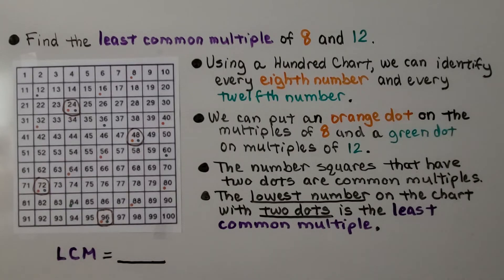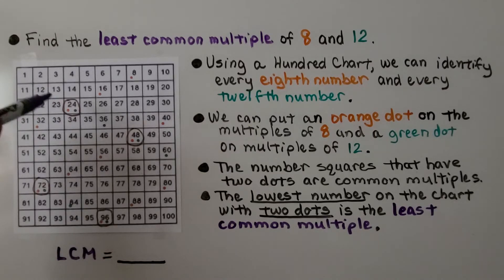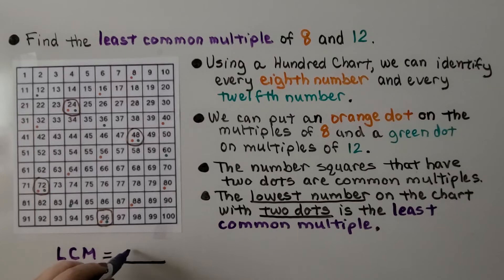So these are the common multiples for 8 and 12. But the least, the lowest number on the chart with two dots is the least common multiple. So the LCM for 8 and 12 is 24.